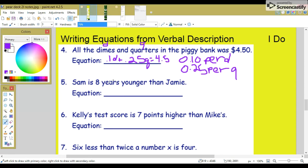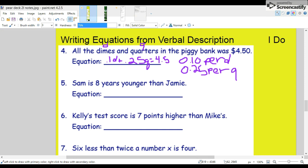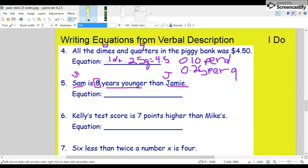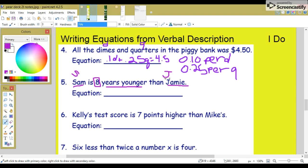Five: Sam is eight years younger than Jamie. So we'll call Sam S and Jamie J. Eight years younger. That's basically going to be eight years younger than Jamie's age is equal to Sam's age. So we could put J minus eight equals S.